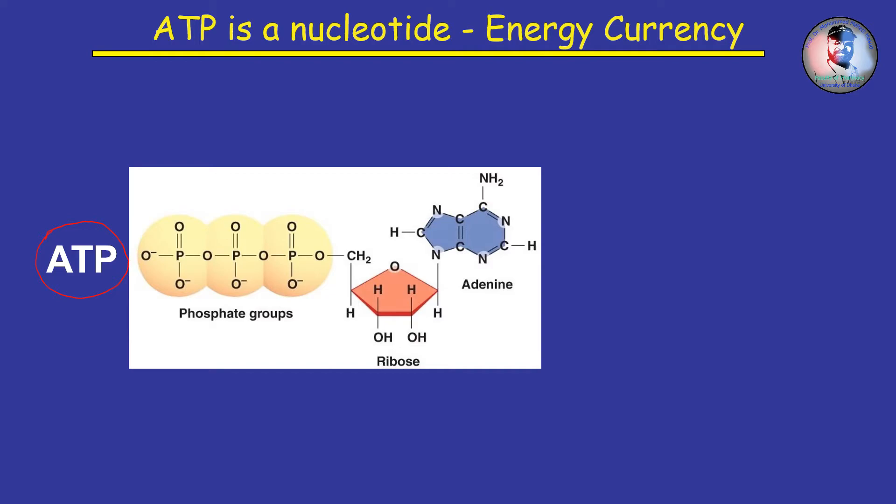ATP is not a storage molecule for chemical energy. That is the job of carbohydrates such as glycogen and fats. When energy is needed by the cell, it is converted from storage molecules into ATP. ATP then serves as a shuttle delivering energy to places within the cell where energy-consuming activities are taking place.